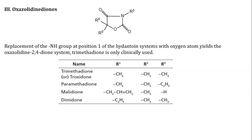Next is Oxazolidinedione derivatives. The replacement of the NH group at position 1 of the Hydantoin system with an oxygen atom yields the oxazolidine-2,4-dione system. In the basic skeleton of Oxazolidinedione, drugs are obtained by substitution at R3 and R5 positions with anti-convulsant activity. Examples are Trimethadione (also known as Troxidone), Paramethadione, Malidione, and Dimethadione.